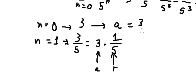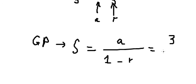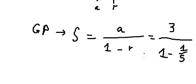a equals 3, r equals 1 over 5, so we get 15 over 4.